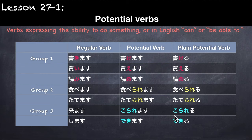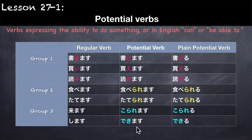For Group 3 verbs: きます (to come) becomes こられます for the potential form, and こられる for the plain form. For します (to do something), it becomes できます, and for the plain form: できる.